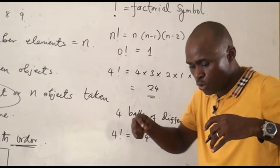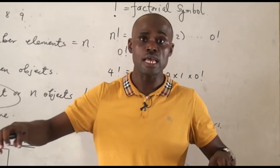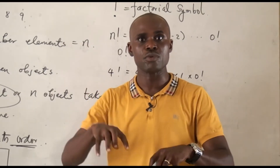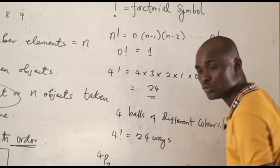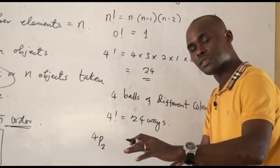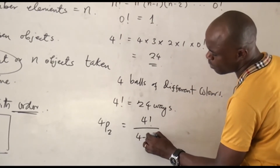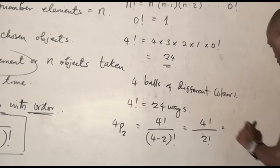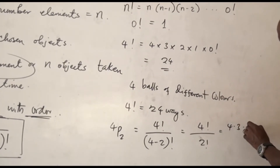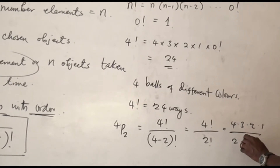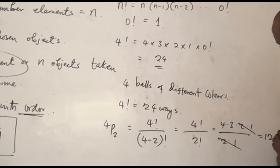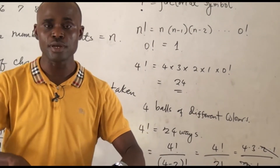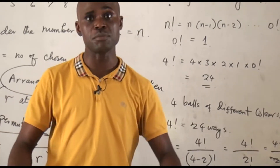But what if we want to arrange those 4 balls and each time we pick only 2 objects? We pick 2 balls whenever we arrange. That is going to be 4 permutation 2, because we choose 2 objects whenever we arrange. So it's 4P2, which is 4 factorial over (4 minus 2) factorial, which is 4 factorial over 2 factorial. This is 4 times 3 times 2 times 1 divided by 2 times 1 — the 2 times 1 cancels, and you have 12 ways. If I want to arrange 4 balls taking 2 at a time, I can arrange them in 12 ways.